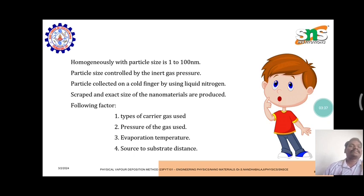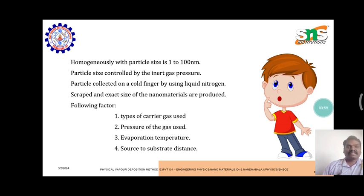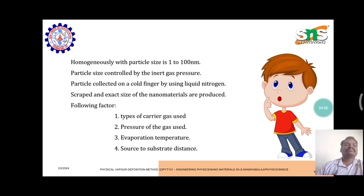This occurs homogeneously with particle sizes of 1 to 100 nanometers. Particle size is controlled by the inert gas pressure. Particles are collected on a cooled finger using liquid nitrogen, then scraped. The exact size of nanomaterials produced depends on the following factors: type of carrier gas used, pressure of the gas, evaporation temperature, and source-to-substrate distance.